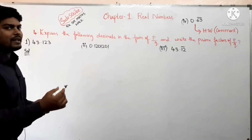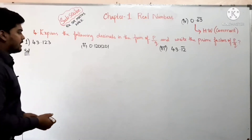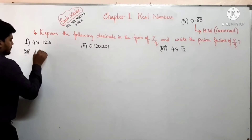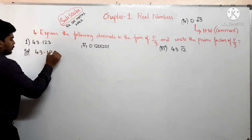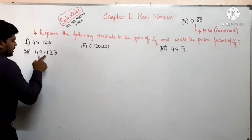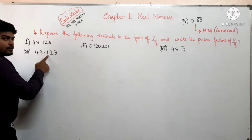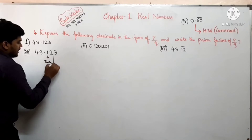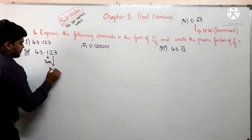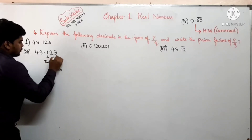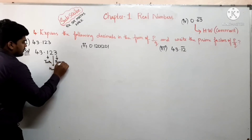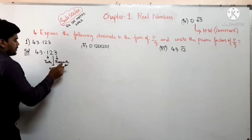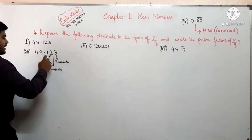Point के बाद की place values मालूम रहनी चाहिए। 43.123 में point के बाद पहला number होता है tenth place value, दूसरा होता है hundredth place value, और उसके बाद वाला होता है thousandth place value।